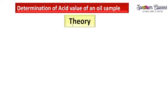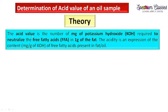Let's start with the theory. The acid value, as the name suggests, is the number of milligrams of potassium hydroxide (KOH) — we can also use NaOH — required to neutralize the free fatty acids present in one gram of the fat. Therefore, acidity is an expression of the content, in milligrams per gram of KOH, of free fatty acids present in the fat or oil sample. The word 'free' here is very important.